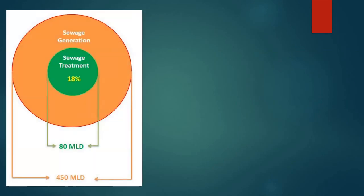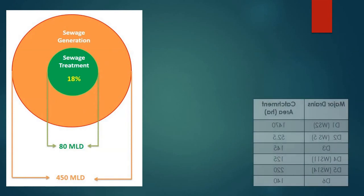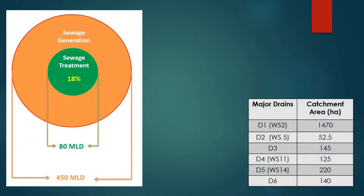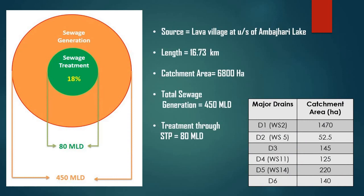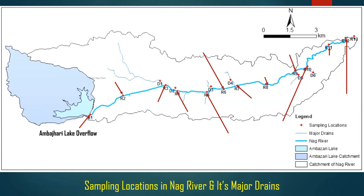Commencing with the water quality simulation, only 18% of sewage is getting treated and the remaining 370 MLD flows as untreated sewage. Some key facts about Nag River: source is Ambajhari Lake, length is 16.73 km, total sewage generation is 450 MLD, and treatment through STP is only 80 MLD.